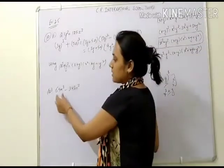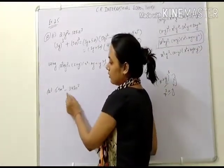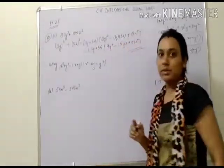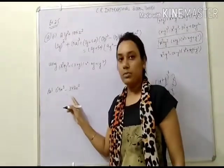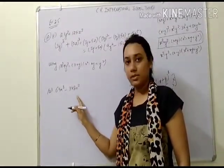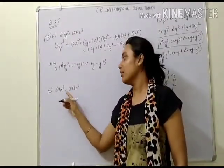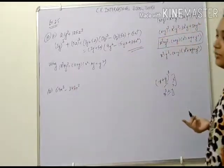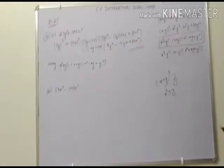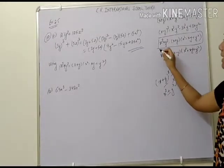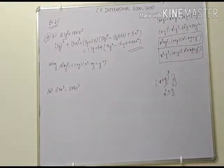Second part: 64m cubed minus 343m cubed. Here we have two cube terms with a minus sign, so we apply the x cubed minus y cubed formula. 64m cubed can be written as 4m whole cube, and 343m cubed can be written as 7m whole cube, since 64 is cube of 4 and 343 is cube of 7. You can find this by using prime factorization.